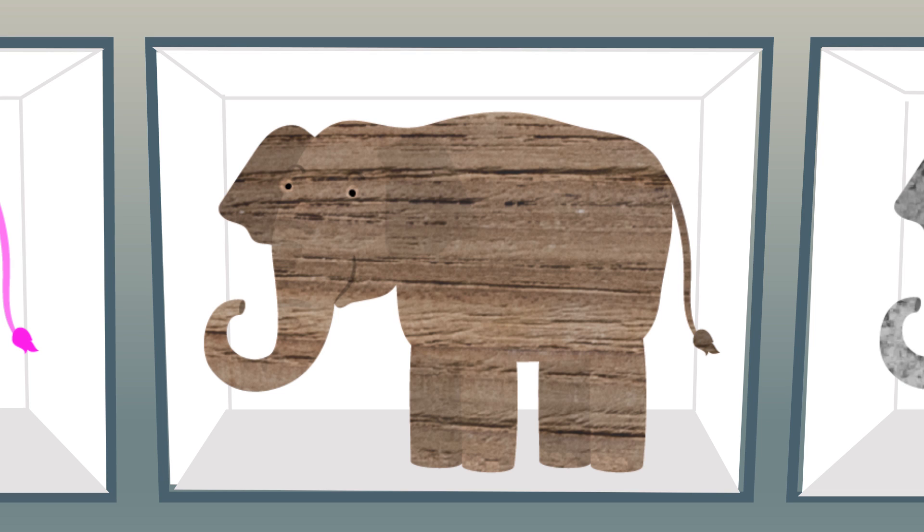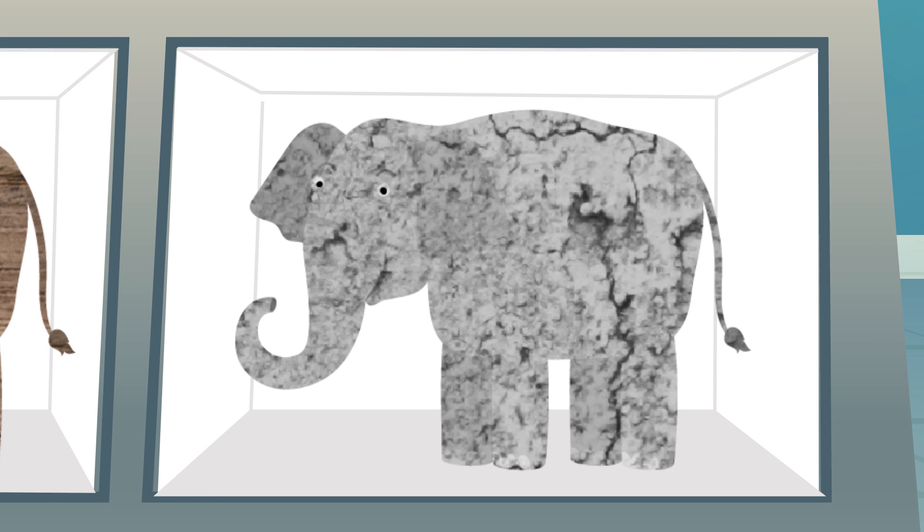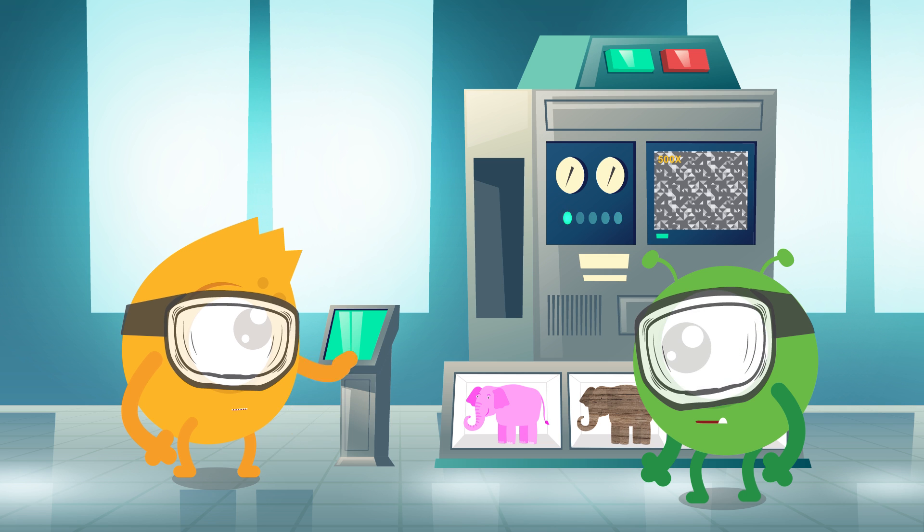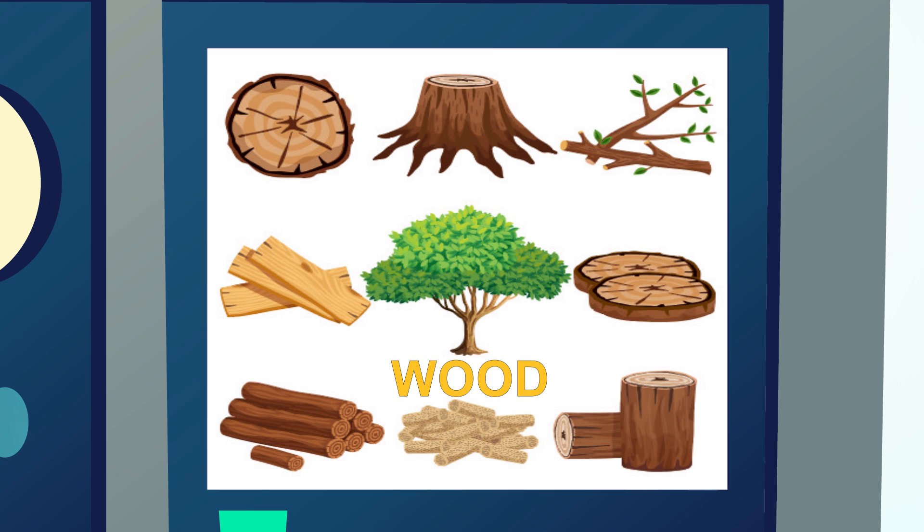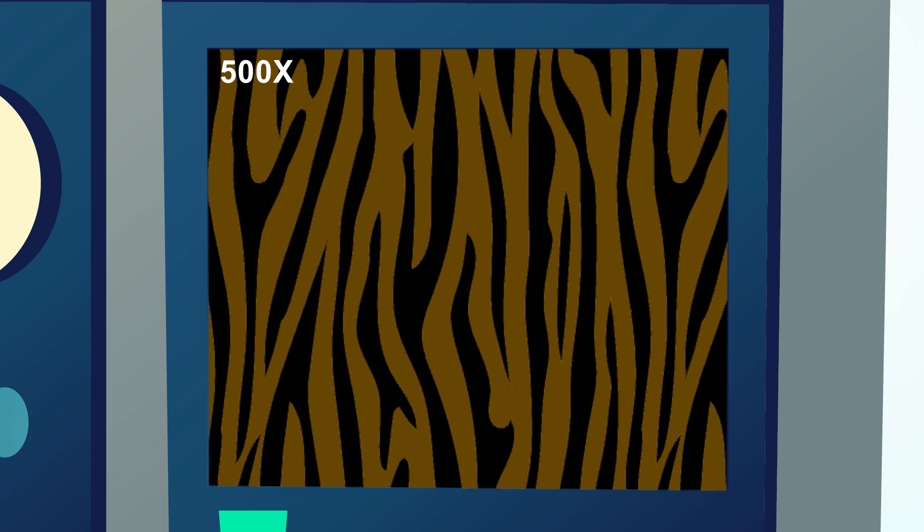But why can I move the brown model? It's the exact same size and volume as the grey one! Right! But the brown model is made of wood! If you were to look inside the wood, you'd see the matter isn't packed as tightly as the cement! The wood has less mass, and so it's easier to move!